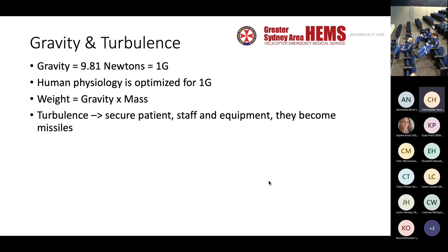Weight is gravity times mass, and that's relevant because if you have a 90 kg patient and you're suddenly experiencing 2G, that patient is now double the weight — effectively over 180 kg. So a patient who started off as an 80 kg person, you've now doubled their effective weight in terms of what happens if they're not secured and start moving around the cabin.